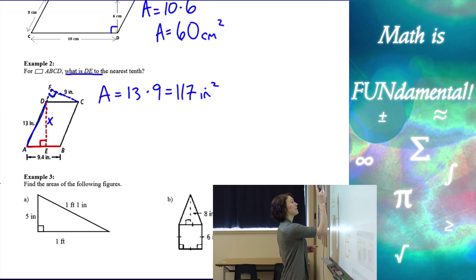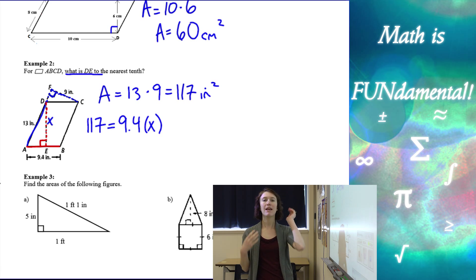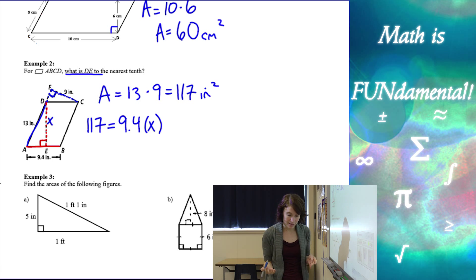So what I can do is I can take that area, 117, and set it equal to the base of 9.4 times its perpendicular length, which is the height X. So I can use the area and make a formula or an equation, to find X.